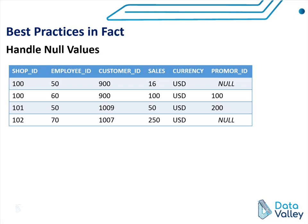To understand why, let's take this example. In this fact table, we are tracking sales by customers. We have shop ID, employee ID, customer ID, sales (which is the amount of money paid by the customer), and currency. We also have a promo ID, which indicates if the purchase operation was using a promo code or a package code, to give the customer a specific percentage of discount.